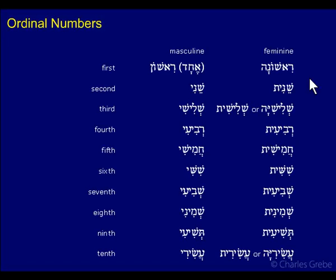Let's now look at ordinal numbers, or numbers that are ordered — so first, second, third, fourth, and so on. Here's our chart showing what they look like. This is actually the only slide for this module.